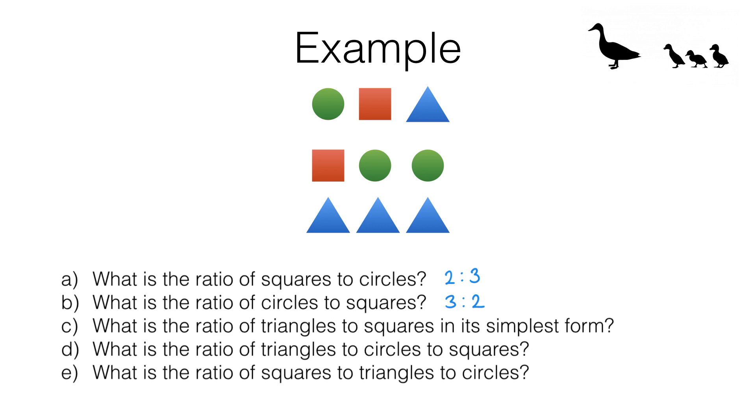For question C we need the ratio of triangles to squares in its simplest form. Now before we worry about the simplest form, let's just count how many triangles and squares we've got.